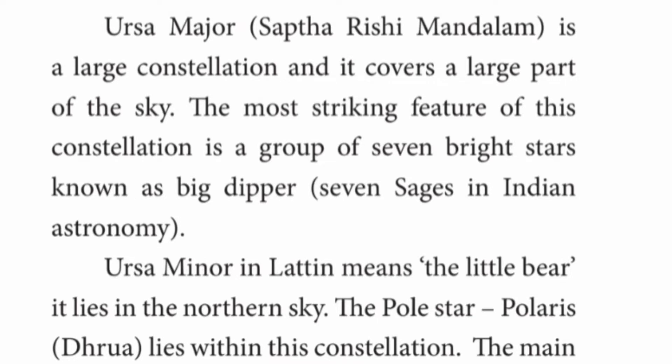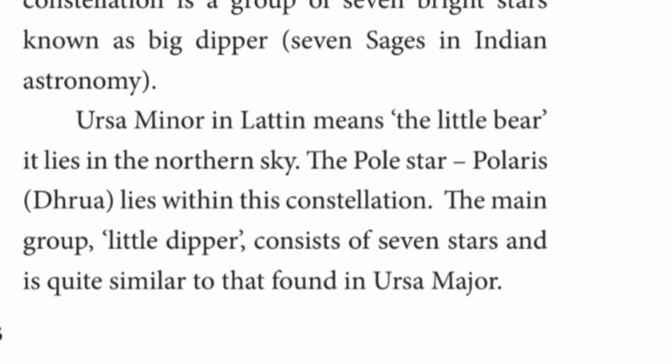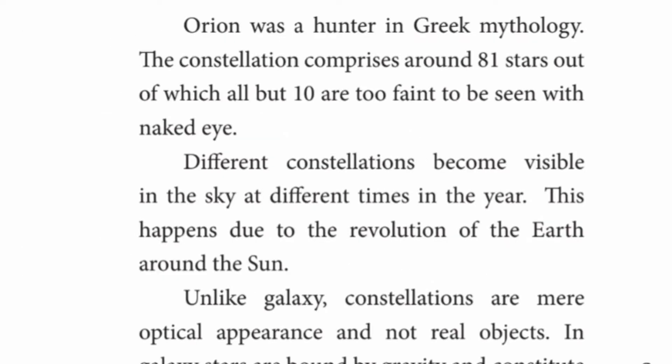Ursa Minor in Latin means the little bear. It is found in the northern sky. The Polestar, Polaris, lies within this constellation. The main group, called the Little Dipper, consists of seven stars and is quite similar to that found in Ursa Major.